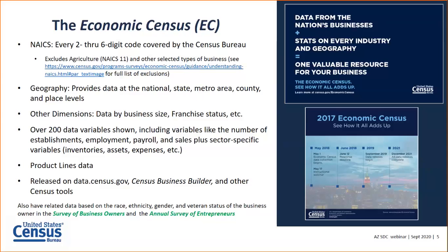The Econ Census is also unique in that we publish product lines data, which allow users to understand the detailed products and services that businesses provide. In our grocery store example, Census would not only publish data on total sales, but also break out how much of sales are for produce, baked goods, poultry, beef, canned goods, etc. There's a detailed breakout for grocery stores, and those products are tailored to each specific industry. These data are all being released for the first time on our new data.census.gov platform, and are also released in other formats.